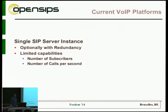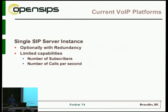Let's look at the current status of most VoIP platforms and the VoIP software around them. Out of the box, everything is most likely a single SIP server instance, so you're only getting capabilities for operating a single SIP server. There are ways to achieve redundancy — like active-backup via virtual IP software, either VRRP or Heartbeat — but at the end of the day, you're limited in how many subscribers and how many calls per second or concurrent calls you can put on a single box.